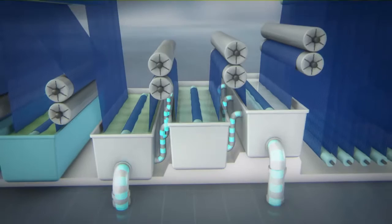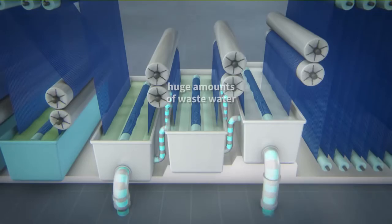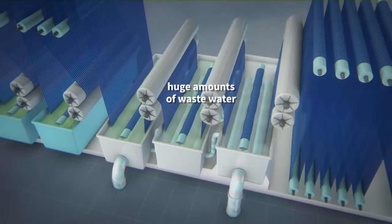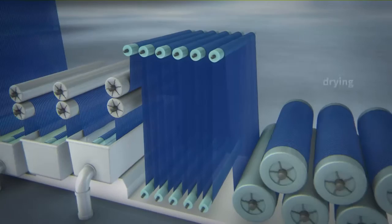The next step removes the chemicals previously added for cleaning and reduction, as well as the unbound indigo, in several washing boxes. This produces large volumes of colored wastewater contaminated with sulfites, which adversely impact the aquatic ecosystem.